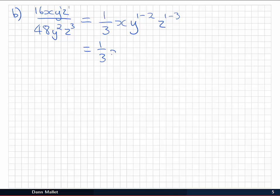Now I simplify those and I've got 1 over 3, x, y to the minus 1, and z to the minus 2. We can leave it like that, or if you like, you could write x over 3yz².